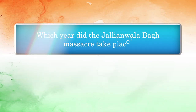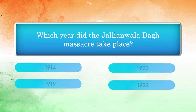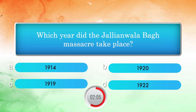Which year did the Jallianwala Bagh Massacre take place? Options: 1914, 1919, 1922. Answer: 1919.